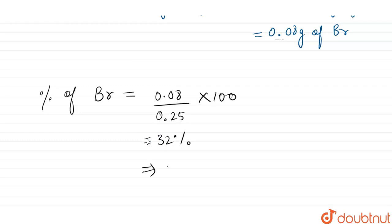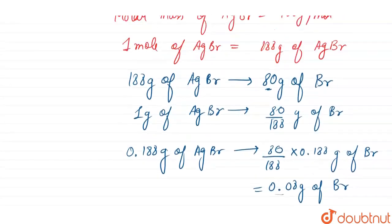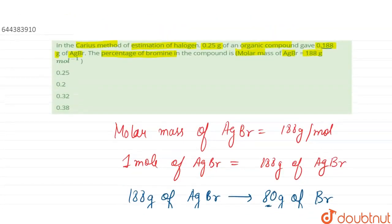So let us have a look at the options that have been given to us. Option number one is 0.25, no this is wrong. 0.2, that is also wrong. 0.32, that is correct. 0.38, that is wrong. So the percentage of bromine in the compound is 0.32 or 32 percent.